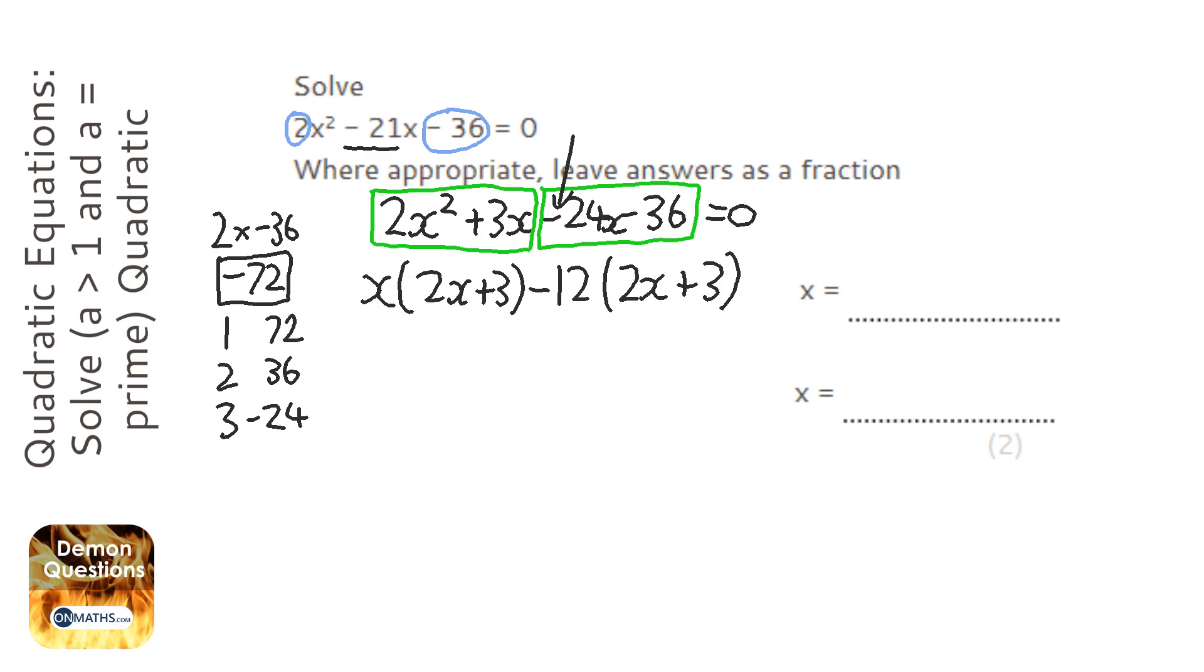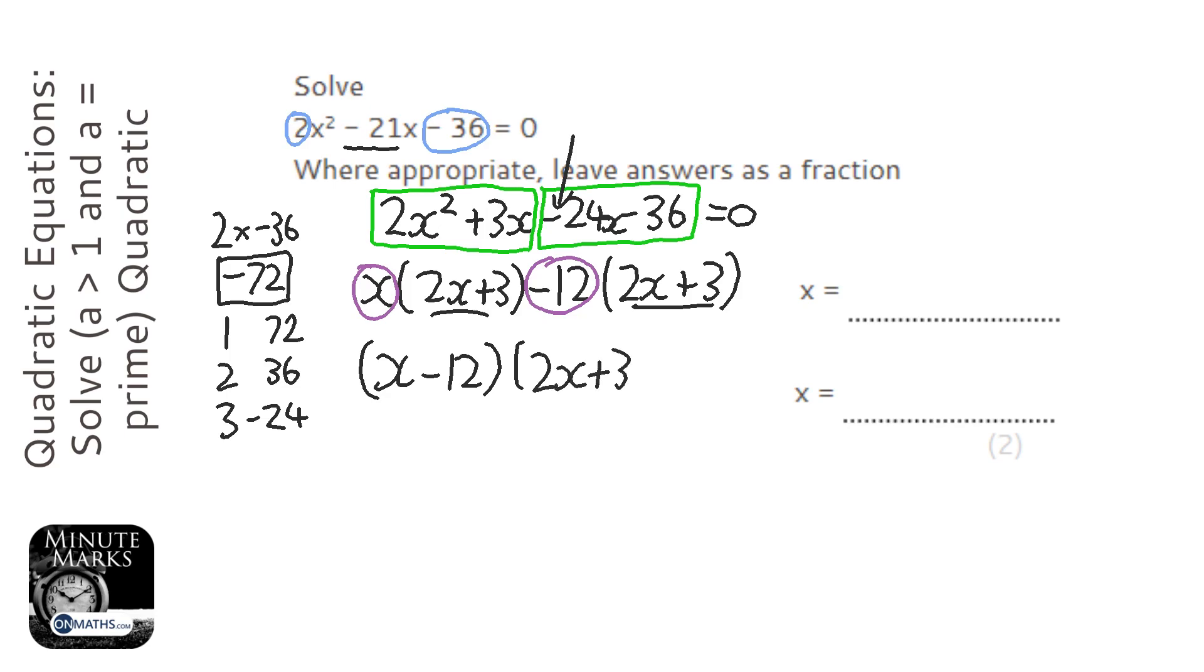OK, next step, I look at the things on the outside of the brackets and put them together. And then I look at the repeated brackets and just write it once. And then I go back and get the equal 0 things in. OK.